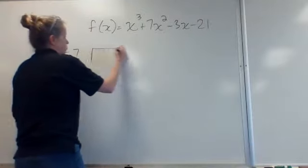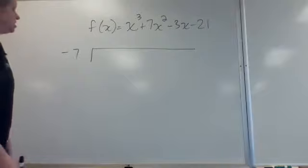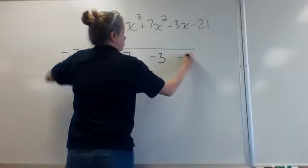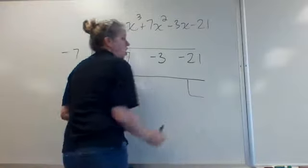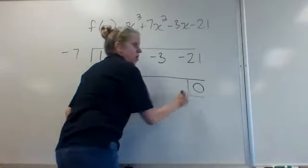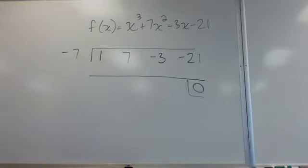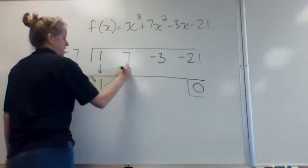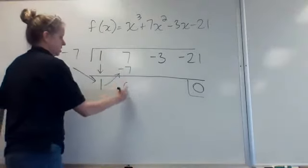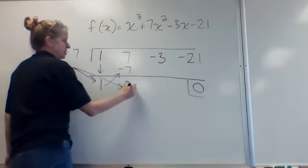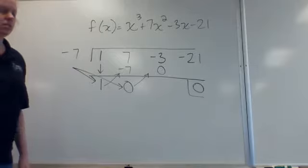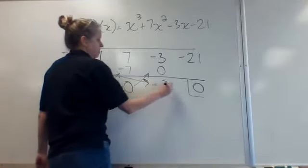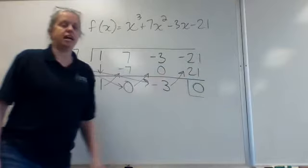If I do synthetic division with negative 7, my coefficients are 1, 7, negative 3, and negative 21. Since I already know this is a zero, this is going to end up being a zero at the end — that's what confirms it's a zero. Drop down to 1. Negative 7 times 1 is negative 7. When I combine those, I get 0. Negative 7 times 0 is 0. When I add down, I get negative 3. Negative 7 times negative 3 is positive 21. And there's my zero.